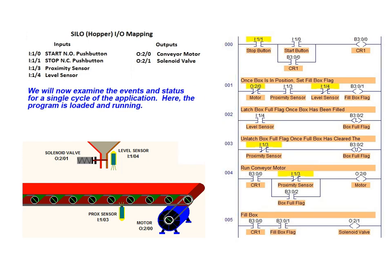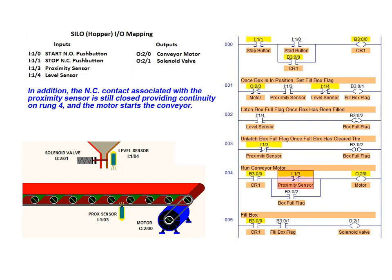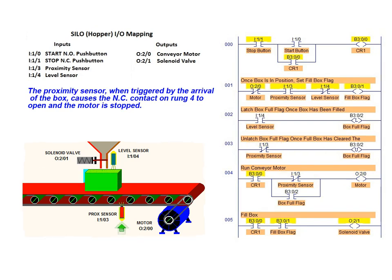We will now examine the events and status for a single cycle of the application. Here we have the program loaded and running. When the start button associated with input rack 1 bit 0 is pressed, the seal-in circuit locks up on rung 0, and the CR1 contacts on rungs 1, 4, and 5 close as they are associated with the B3 0.0 holding bit. The NC contact associated with the proximity sensor is still closed, providing continuity on rung 4 and the conveyor motor starts, bringing a box forward to the filling station. When triggered by the arrival of the box, the proximity sensor causes the NC contact on rung 4 to open, and thus the conveyor motor is stopped.